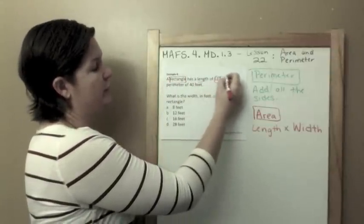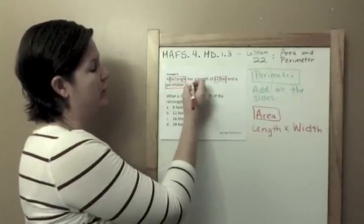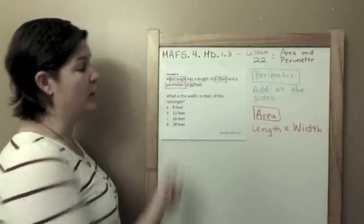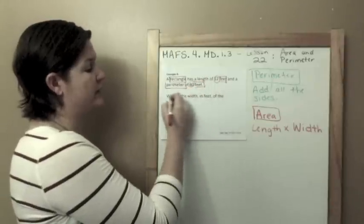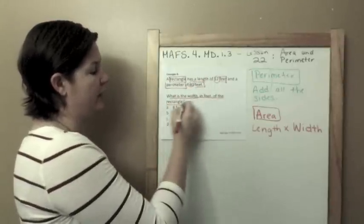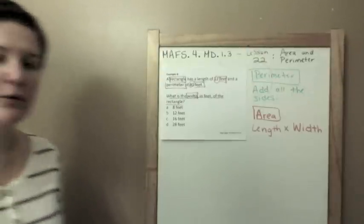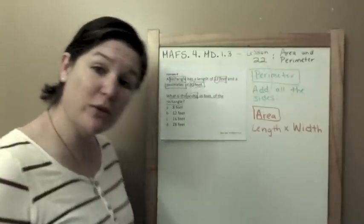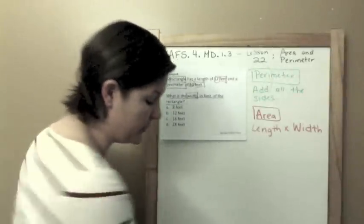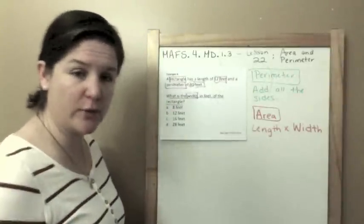Of 12 feet and a perimeter of 40 feet. What is the width in feet of the rectangle? So we are looking for the width. Let me draw out what we know, which is what you should be doing too as you follow along with me, and what you should do on the FSA when you see this type of problem.